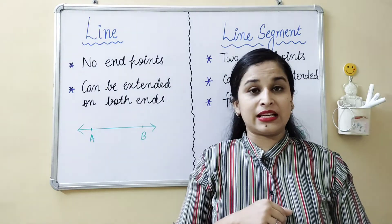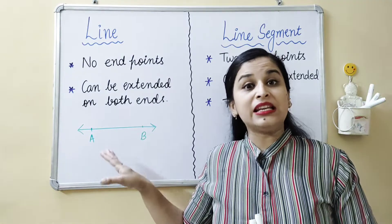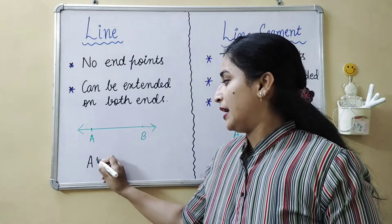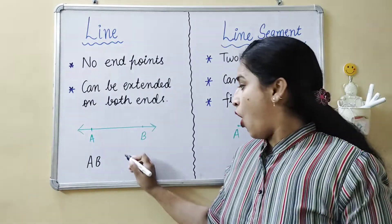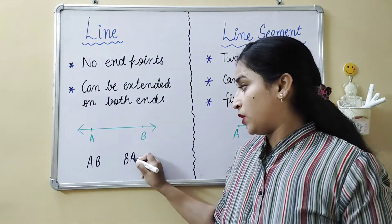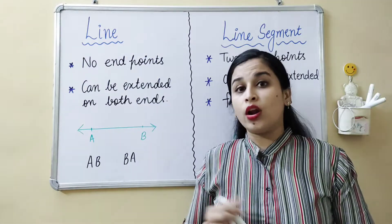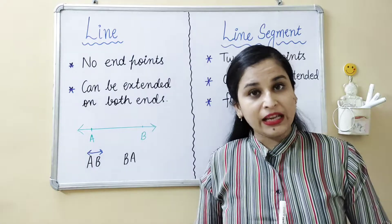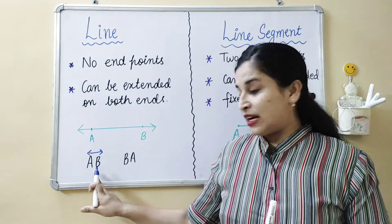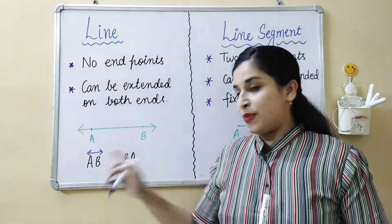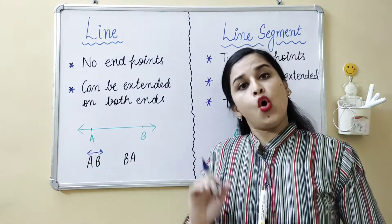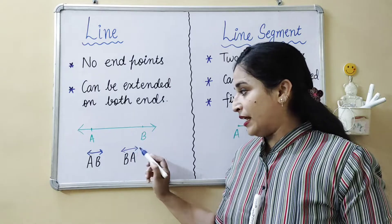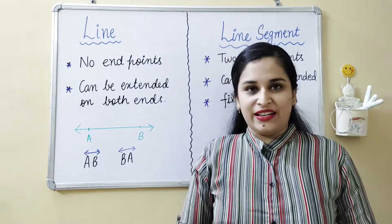Now the question arises: how can we write the name of this line? So we can write it like this — it is A, B, or B, A. There is always a symbol we make when writing the name of a line. We write it with a double-arrow symbol above A, B. And B, A is also a valid name for the line, so we write the line symbol above that too.